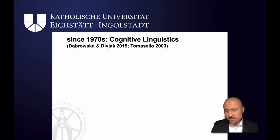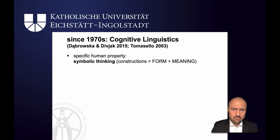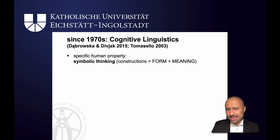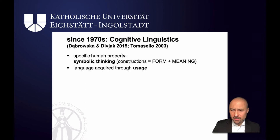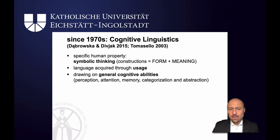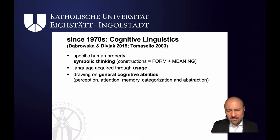From the 1970s, an alternative to generative grammar emerged, known as cognitive linguistics. Cognitive linguistics argues that there is a specific human property: symbolic thinking — the idea that we associate form and meaning in linguistic signs like apple, tree, table, and so on. They also argue that language is acquired through usage, so it's not an innate grammar that plays a huge role, but input and input frequency. We analyze this input subconsciously drawing on general cognitive abilities: perception, attention, memory, categorization, abstraction. It's not a language module per se that does the job, but our general cognitive apparatus.